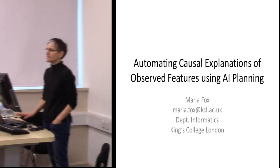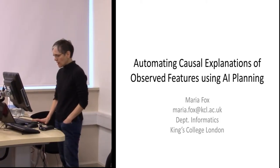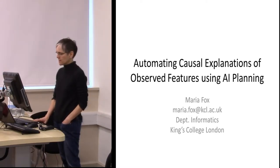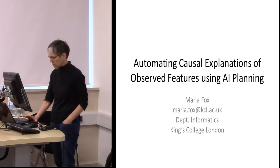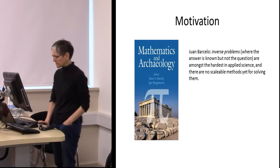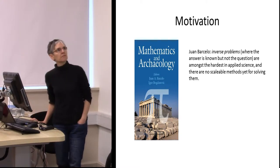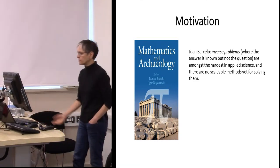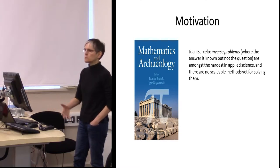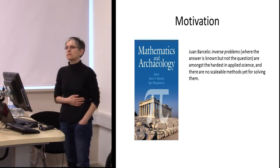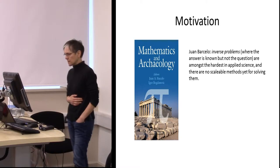This talk will be something a bit different, but my research in computer science is in artificial intelligence planning, and I see some relevance. I recently read this excellent book in which Juan Barcelo talks about inverse problems and the difficulty of solving these. Inverse problems are where the answer is known but the question isn't, and you want to reason backwards from something you observe to the possible causes of that phenomenon. These are amongst the hardest problems to solve in applied science.